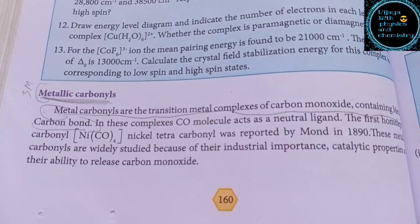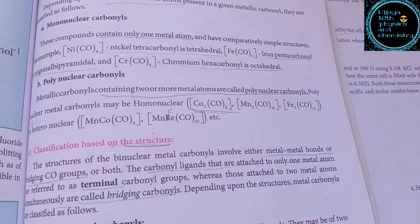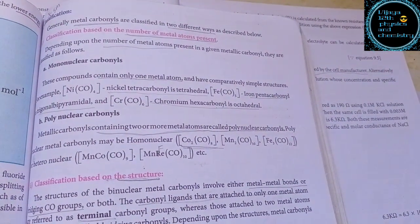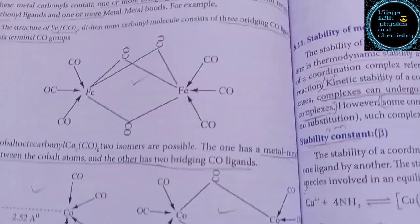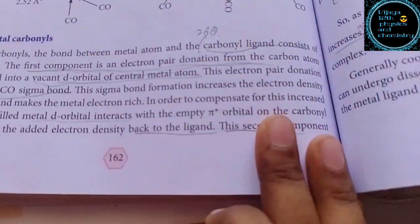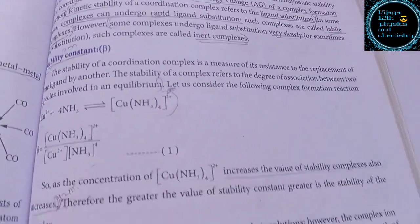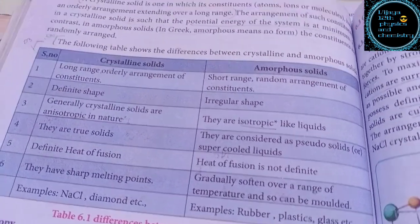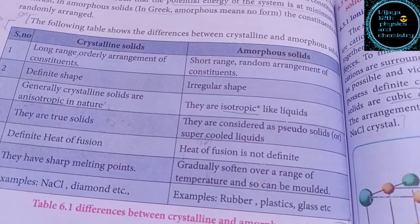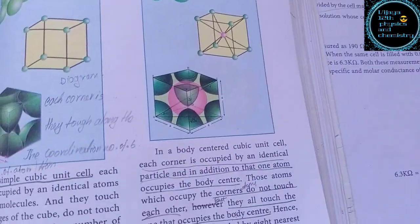Metallic carbonyl and crystal structure classifications. We can do classifications based on structure and metal atoms. One example involves a bond. The explanation will be brief. This is an important 3-5 mark topic. This is a body-centered cube structure.